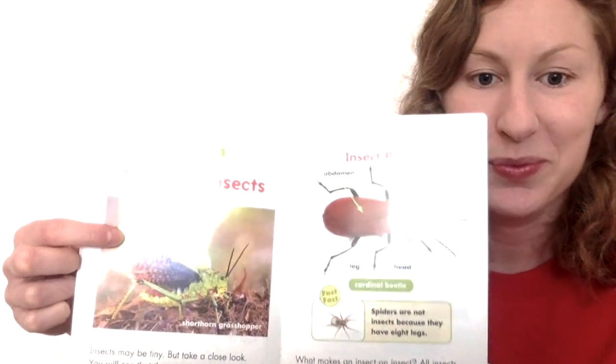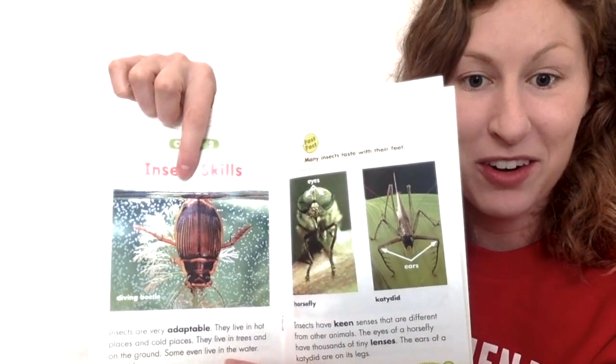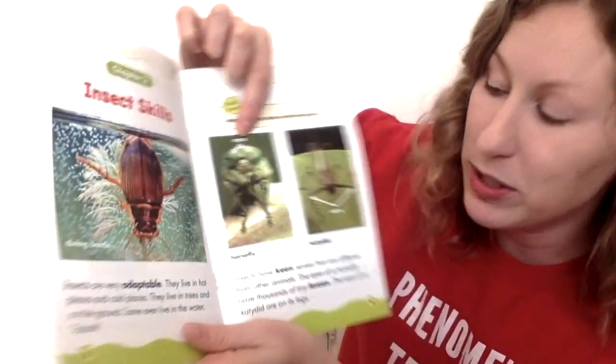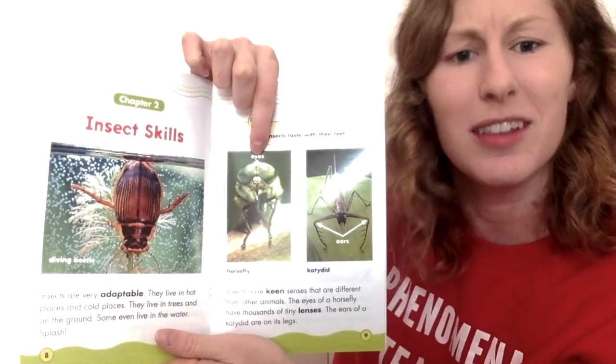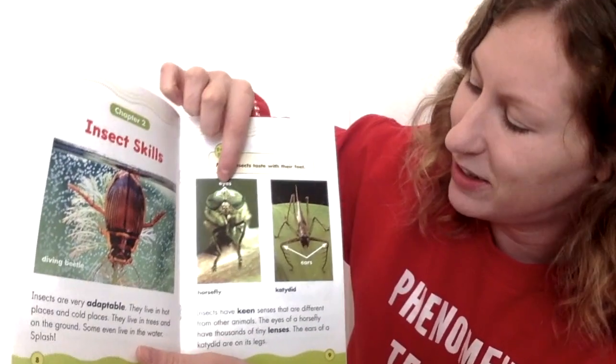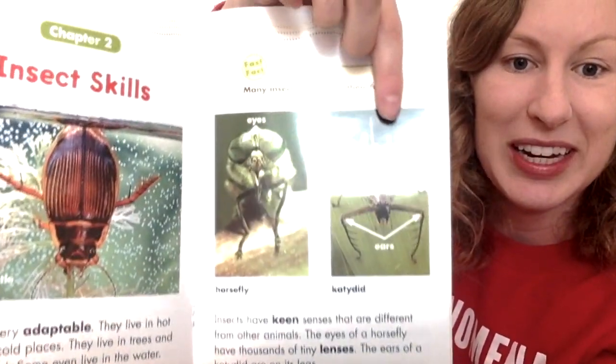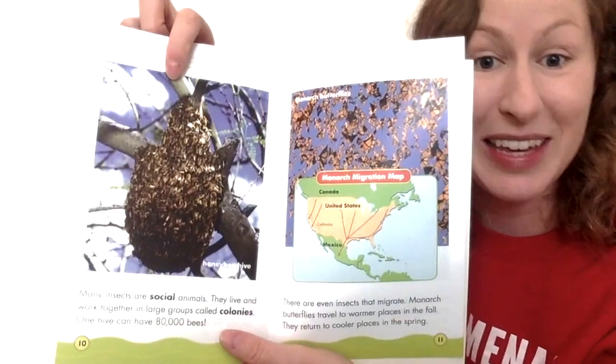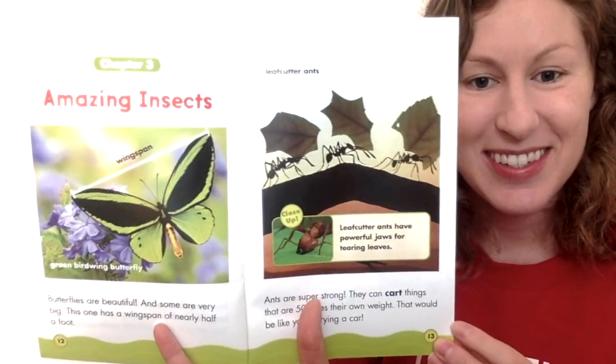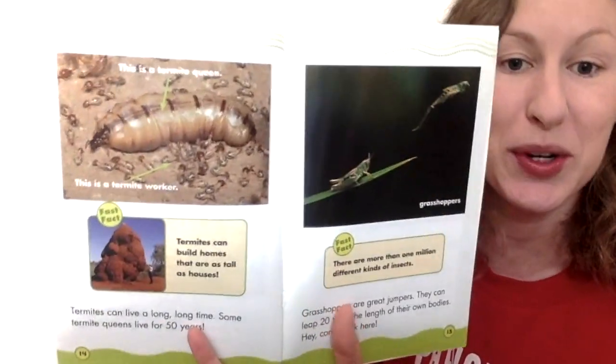Finally, number three says: which insect in this book is your favorite? Draw a picture of it. Let's review the insects we looked at: a grasshopper, a beetle, a ladybug, another beetle, a horsefly — I also see a lot of houseflies in my house, and that would also be considered an insect. We also saw a katydid, bees and butterflies, ants, and finally a termite and a grasshopper.